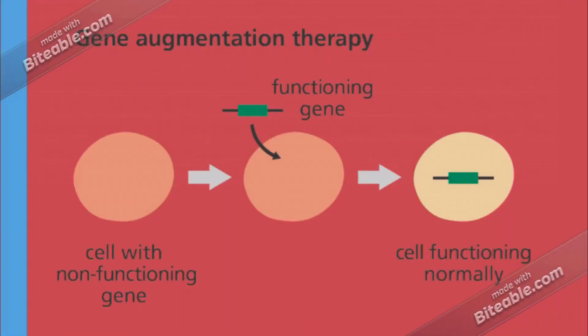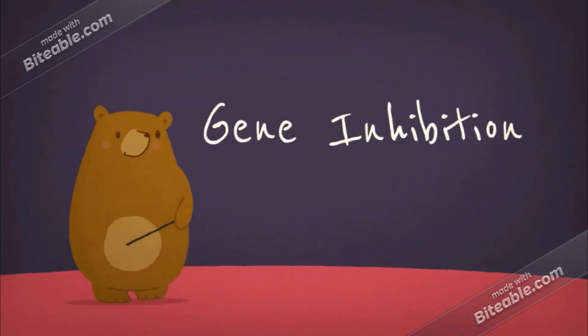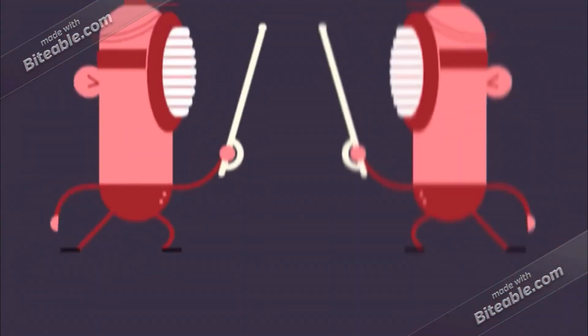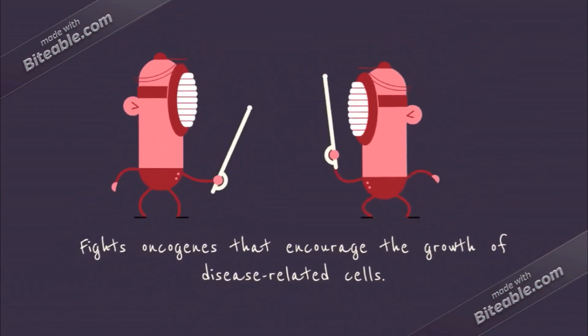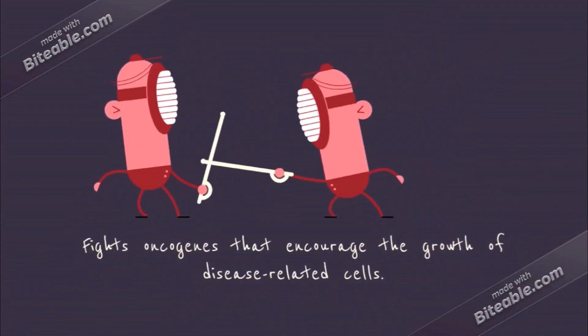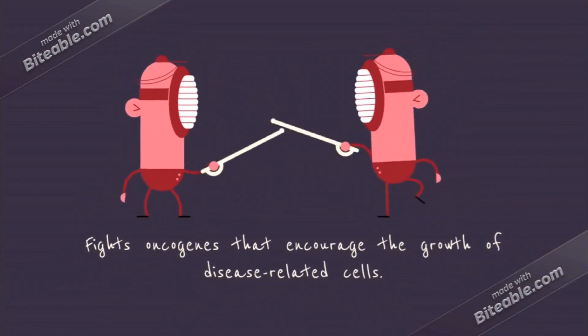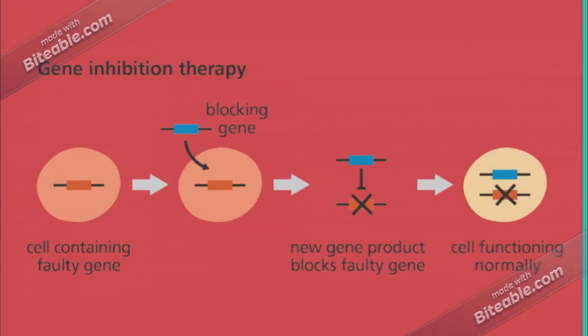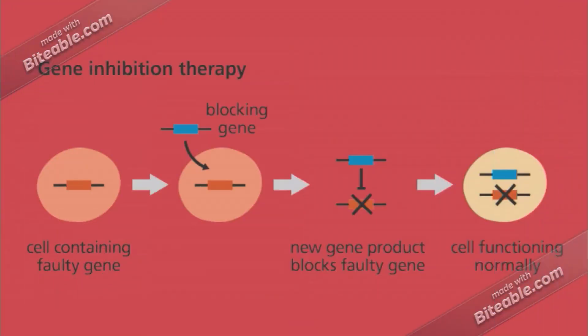The second technique is called gene inhibition. This method eliminates the activity of an oncogene — a cancer-causing gene — that encourages the growth and proliferation of cancerous cells. By eliminating its activity, it is possible to inhibit cancer growth.